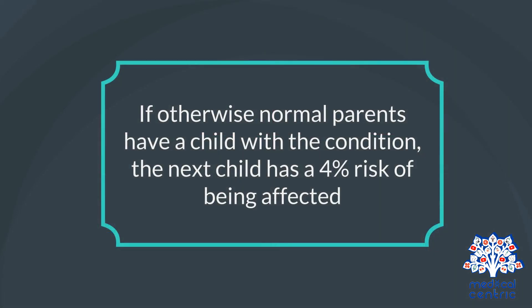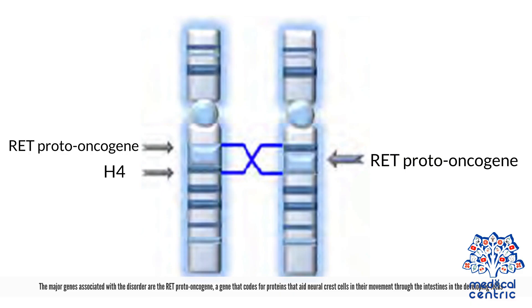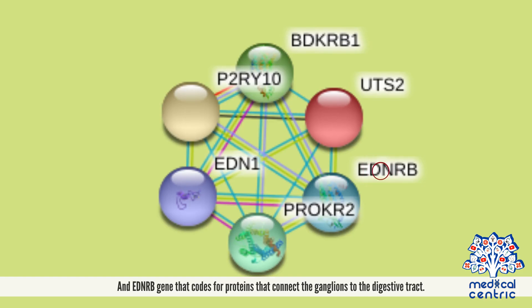If otherwise normal parents have a child with the condition, the next child has a 4% risk of being affected. The major genes associated with the disorder are the RET proto-oncogene, a gene that encodes for proteins that aid neural crest cells in their movement through the intestines in the developing fetus, and the EDNRB gene, which codes for proteins that connect the ganglions to the digestive tract.